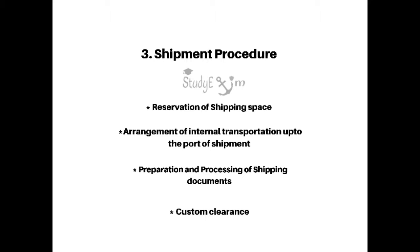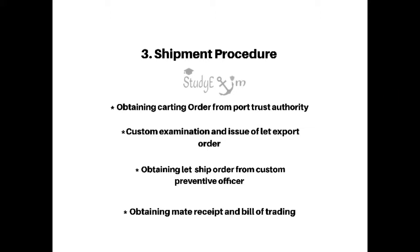Third, the shipment procedure includes reservation of shipping space, arrangement of internal transportation up to the port of shipment, preparation and processing of shipping documents, custom clearance, obtaining carting order from the port trust authority, custom examination, issue of let export order, obtaining let ship order from the custom preventive officers, and obtaining mate receipt and bill of lading.